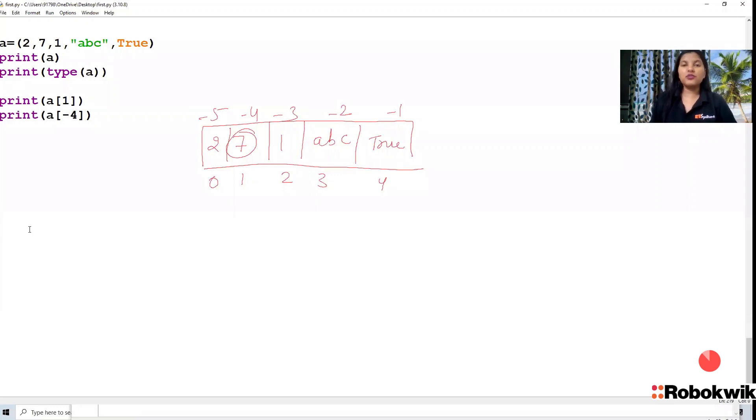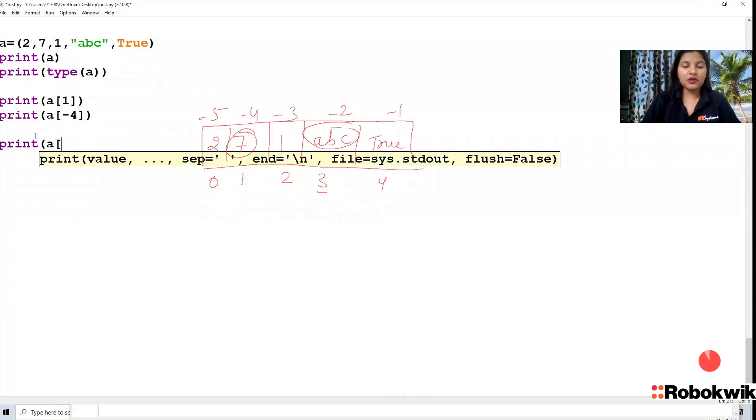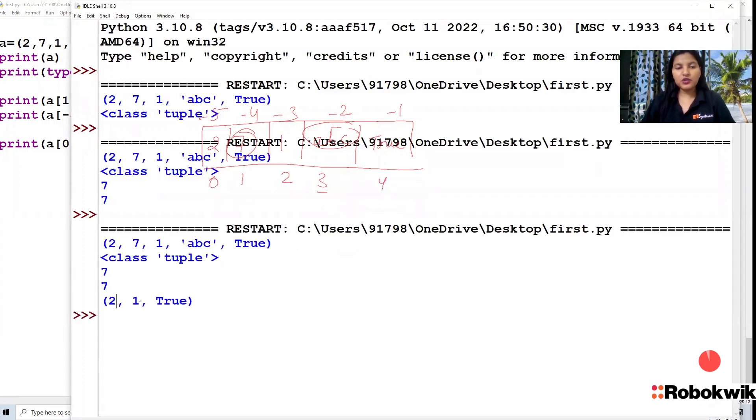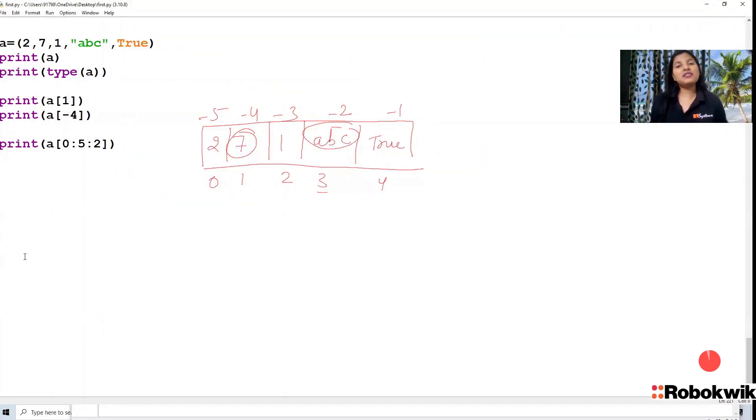So we can use 1 or minus 4. If you want ABC, you can use A of 3 or A of minus 2. Now, next thing is, if I need 2, 1 and true, then we can directly print A of start from 0 to 5 and step is 2, like I have done in the last list. And tuple also. 2, 1 and true. So now slicing also supports tuple. You can also do slicing.